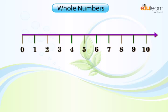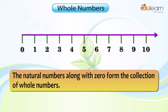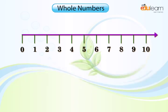In other words, the natural numbers along with 0 form the collection of whole numbers. We can also say that the set of whole numbers consists of 0 and the natural numbers. So except 0, all whole numbers are also natural numbers.